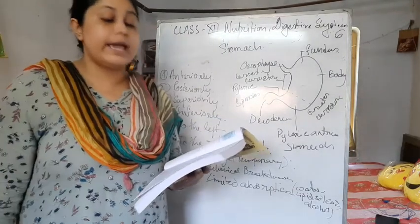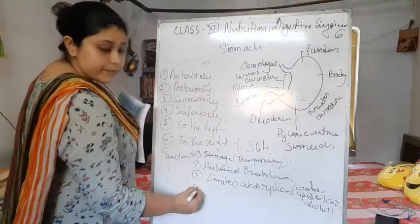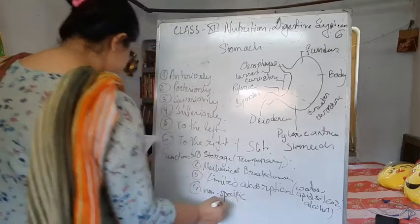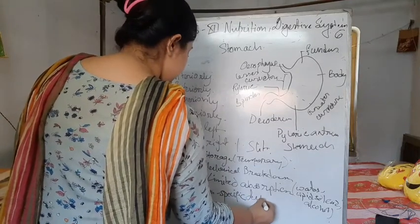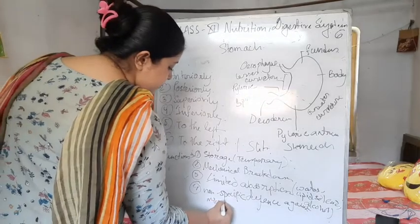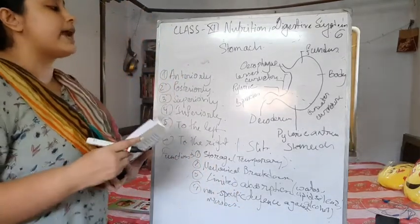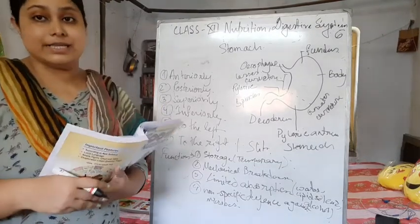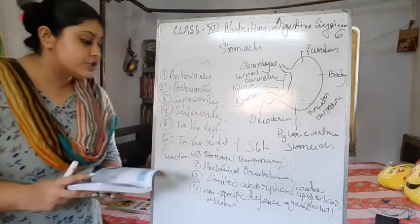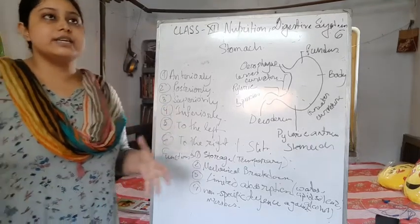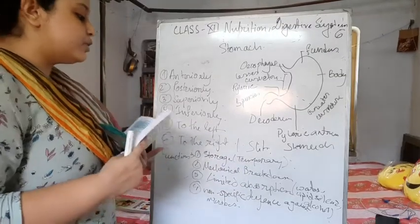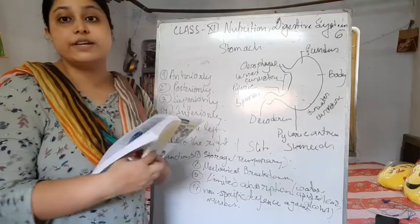The next function is non-specific defense against microbes, which is a very important part. In the gastric juice, HCl is secreted, and this helps to destroy certain dangerous microbes present in our food. This helps break down these microbes and produces a defense mechanism against them.